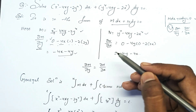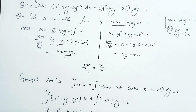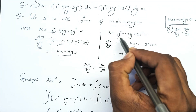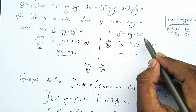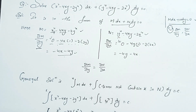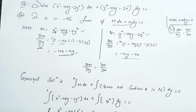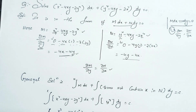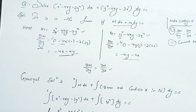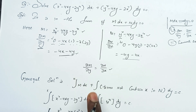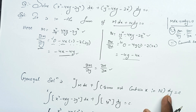Since ∂M/∂y = ∂N/∂x, this equation is an exact differential equation. The general solution formula is: ∫M dx (treating y as constant) plus ∫(terms not containing x in N) dy = c.